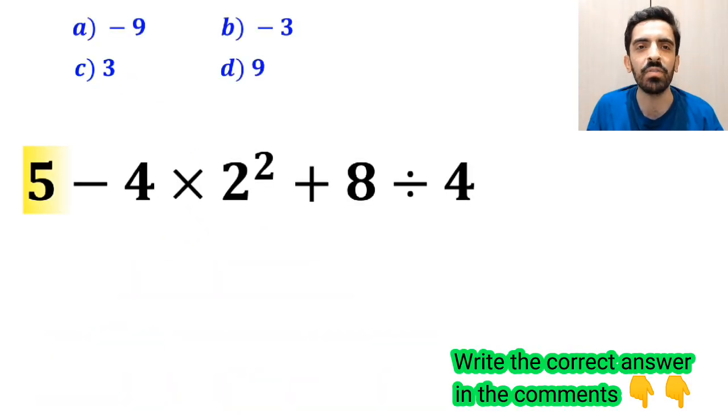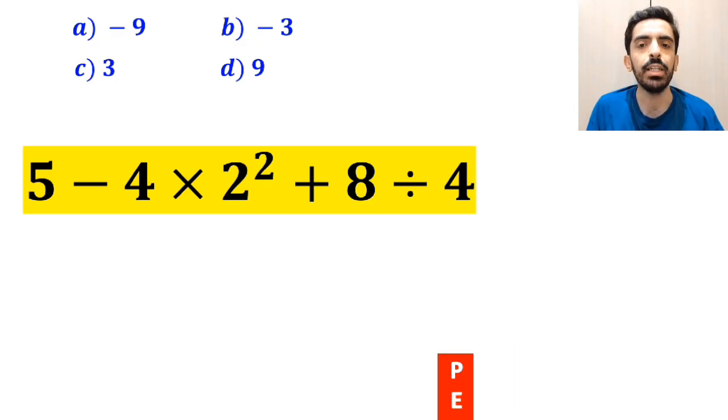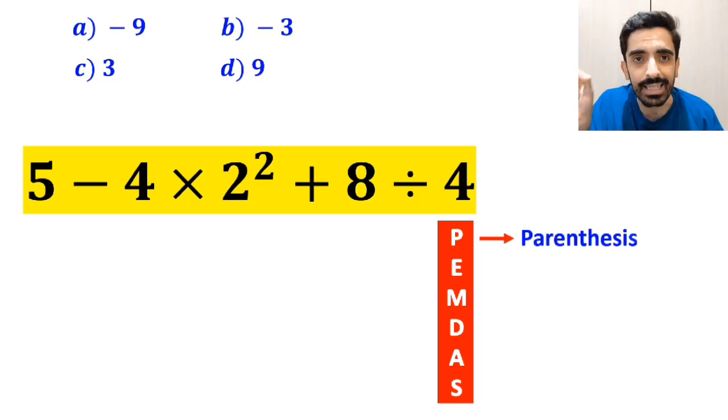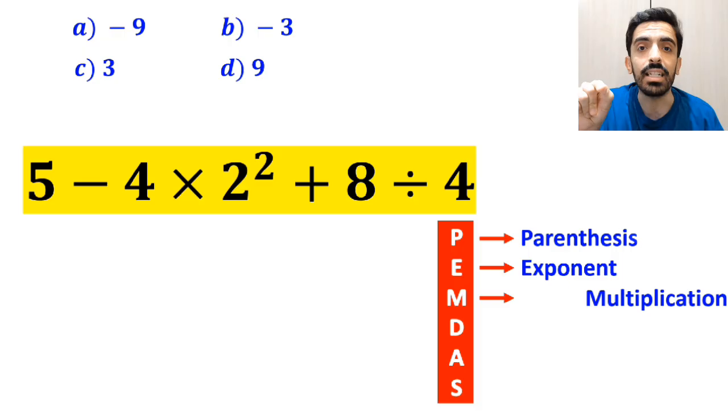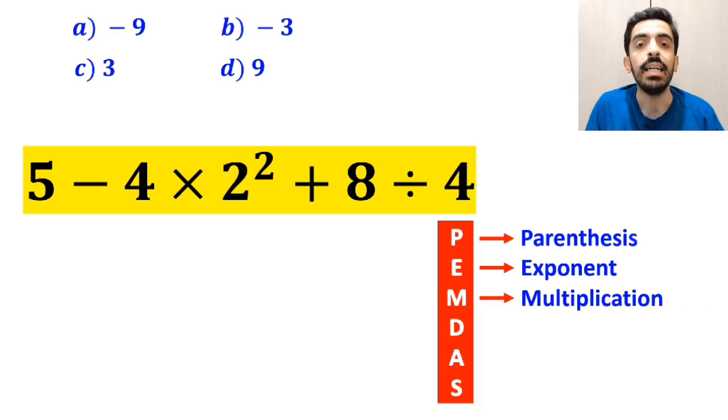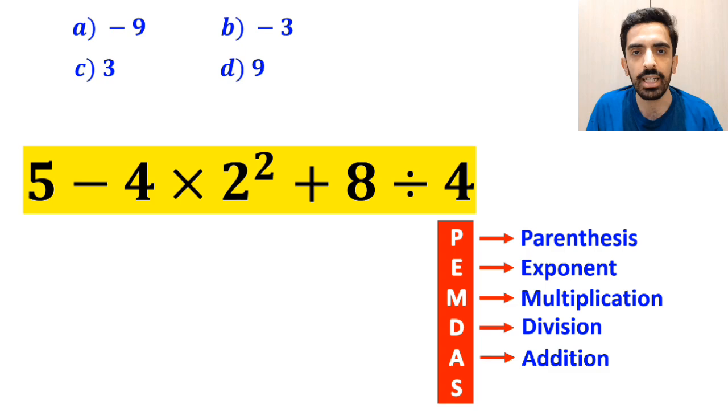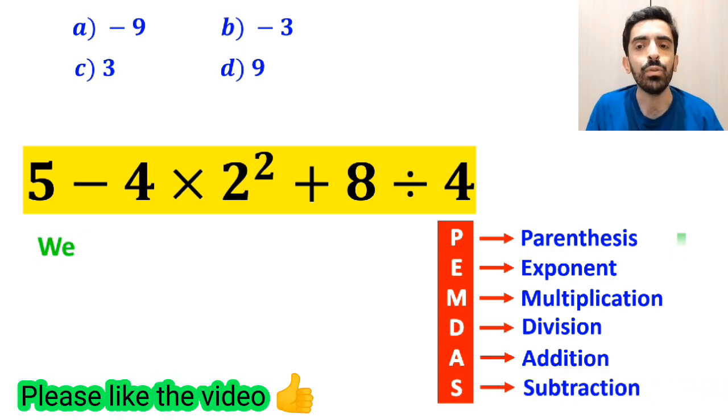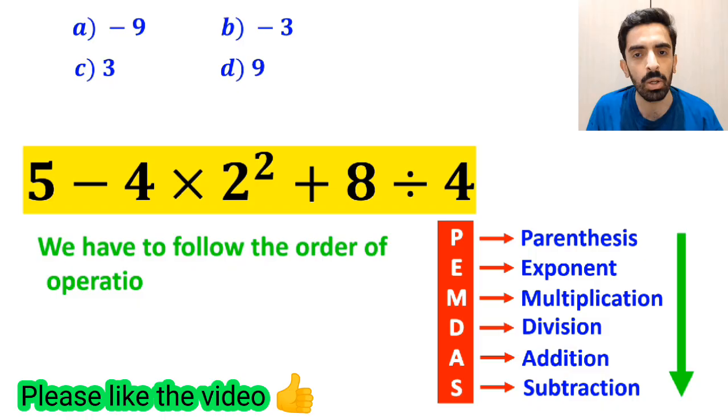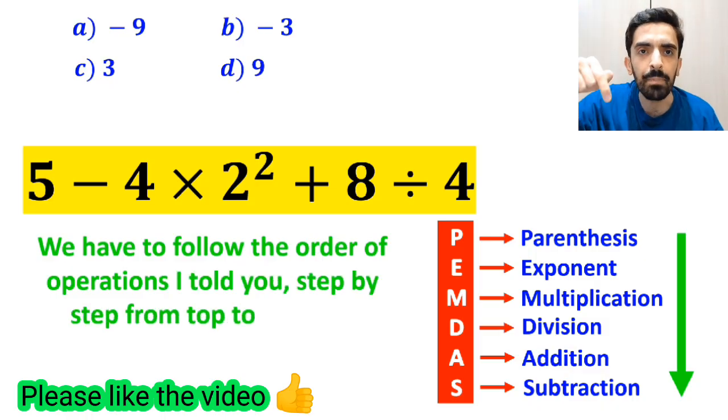Now let me show you how to solve this expression correctly. To solve this question, we need to follow the PEMDAS rule. In this rule, P stands for parentheses, E stands for exponent, M stands for multiplication, D stands for division, A stands for addition, and S stands for subtraction. We have to follow the order of operations step by step from top to bottom.